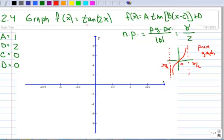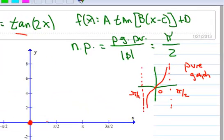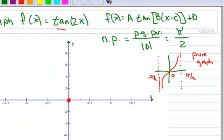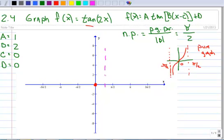Now we want to graph this tangent with our new period of π over 2 instead of π. I know I'm going to have an x-intercept right there at 0. Then I know that rather than having an asymptote at π over 2, instead I'm going to have it at π over 4. I'll just make it on here.